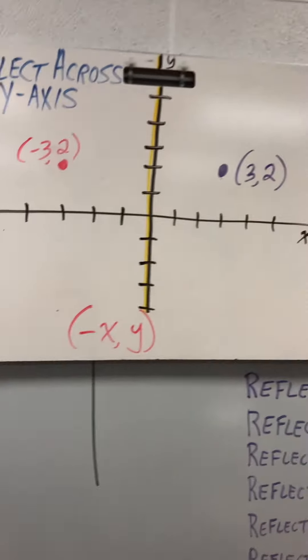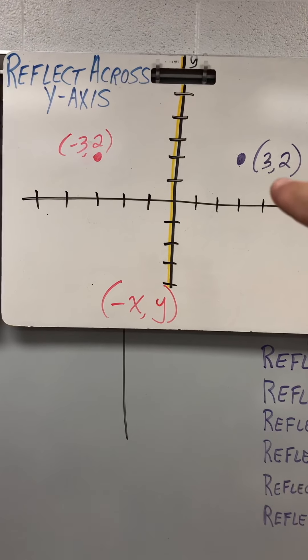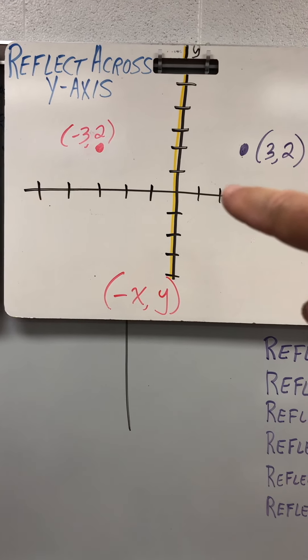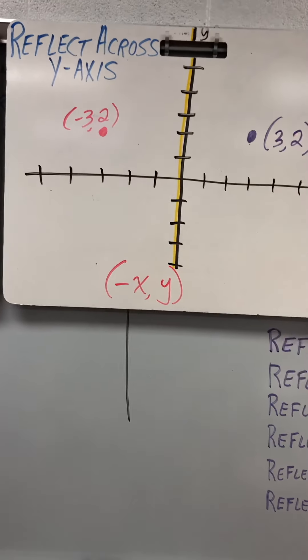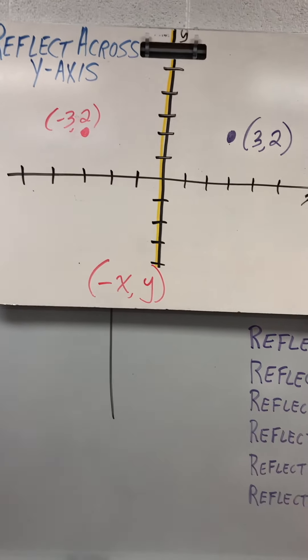To reflect across the y-axis, all right, if the original is 3 to the right of the y-axis, the reflection will be 3 to the left. So that's going to be negative x, y, okay?